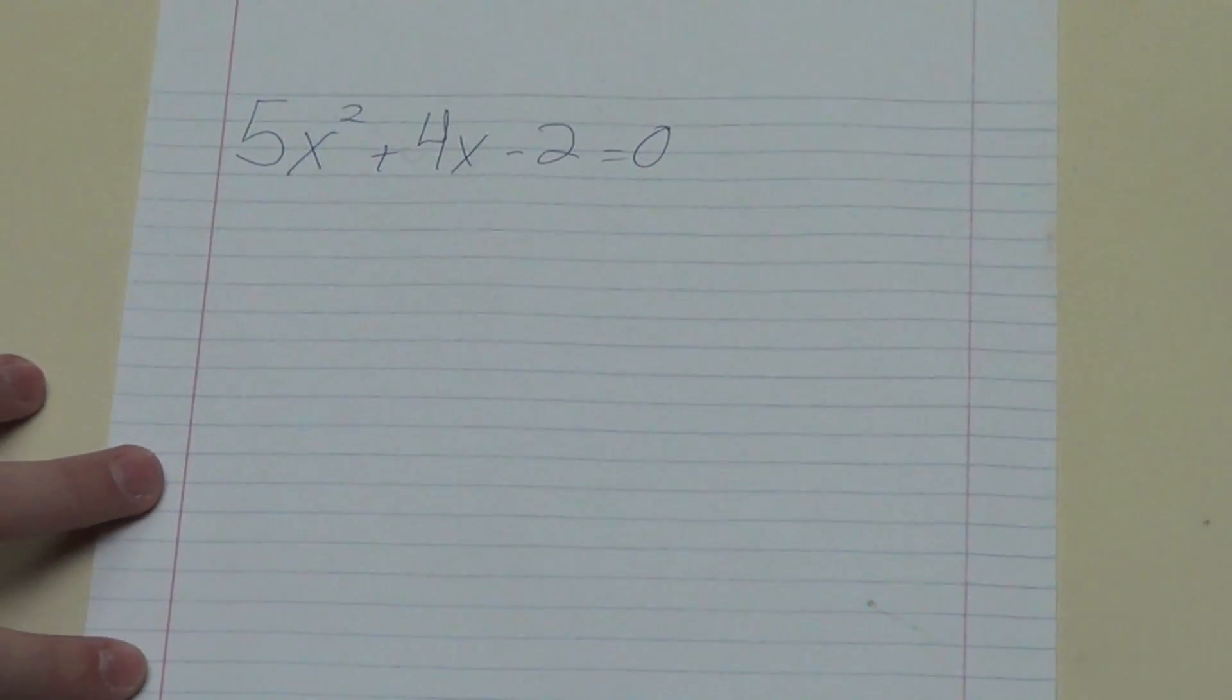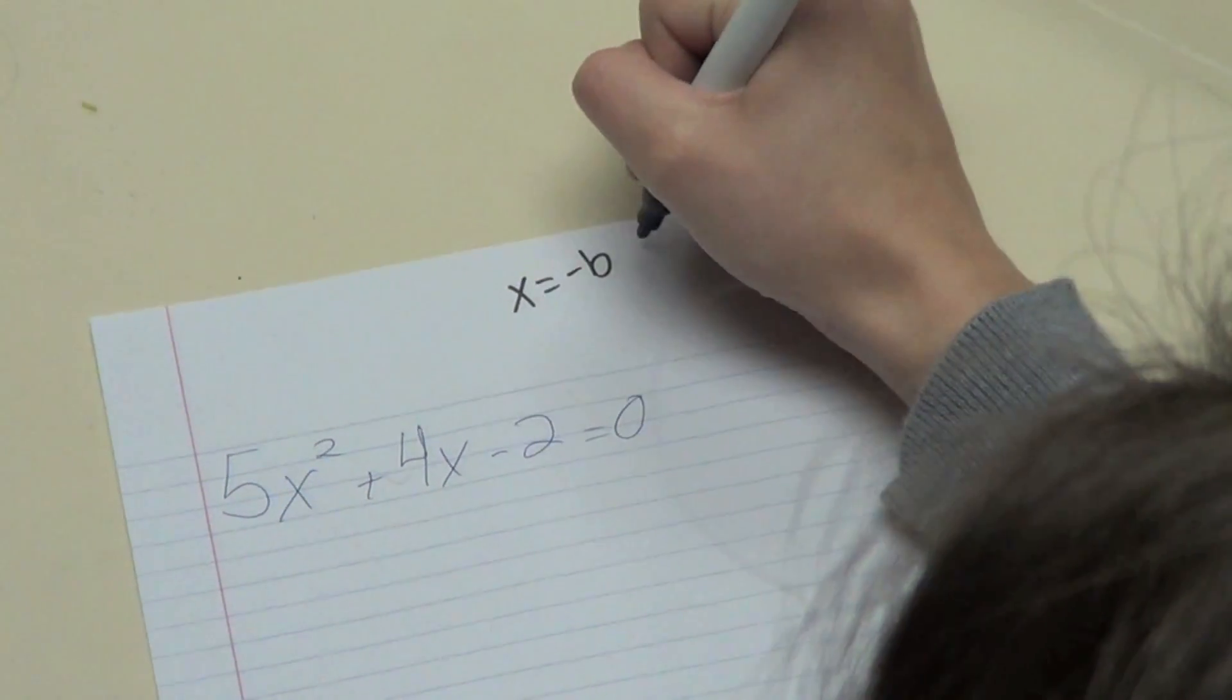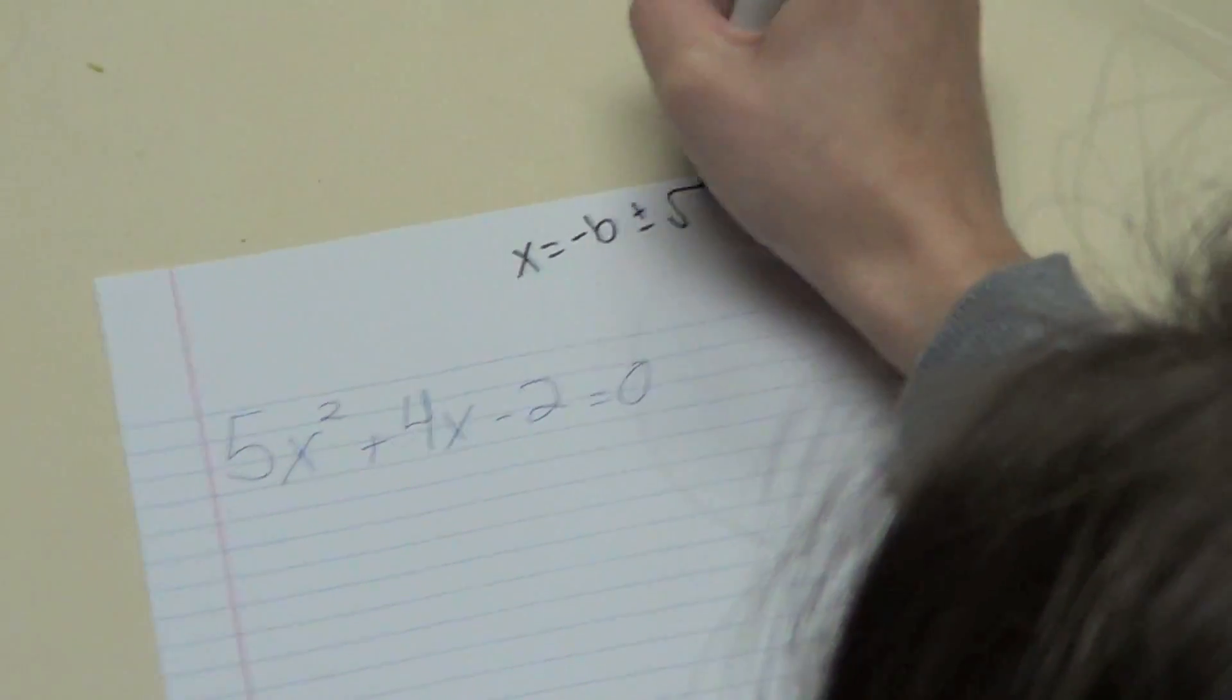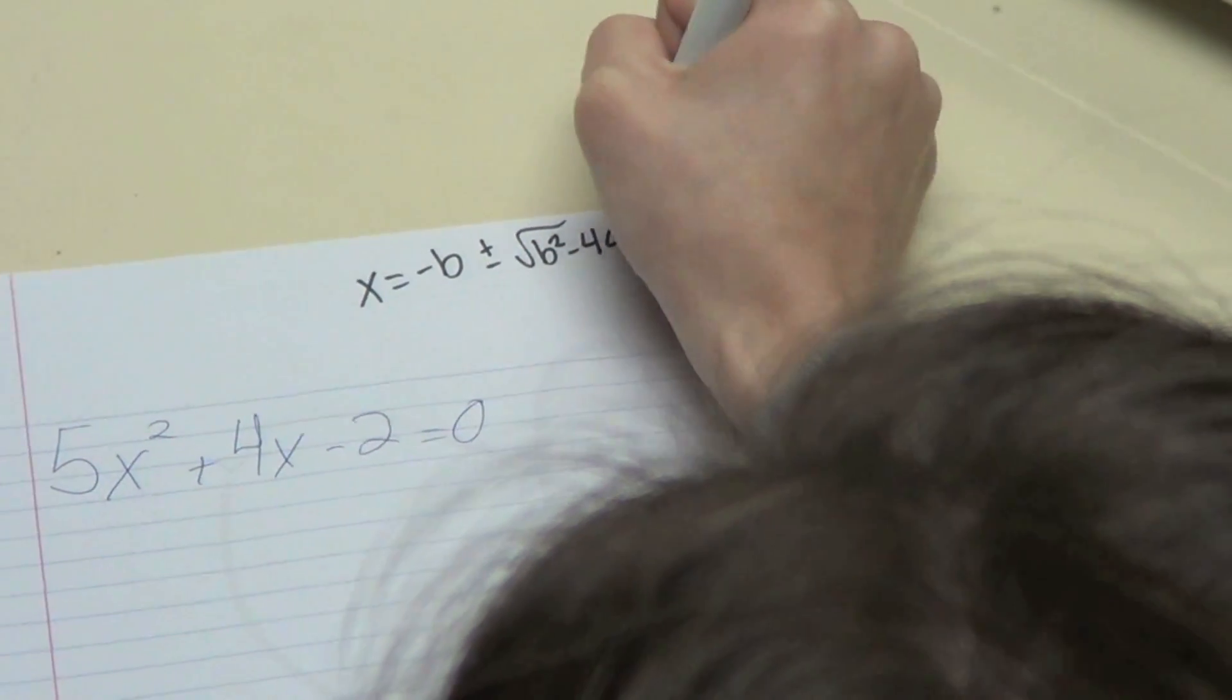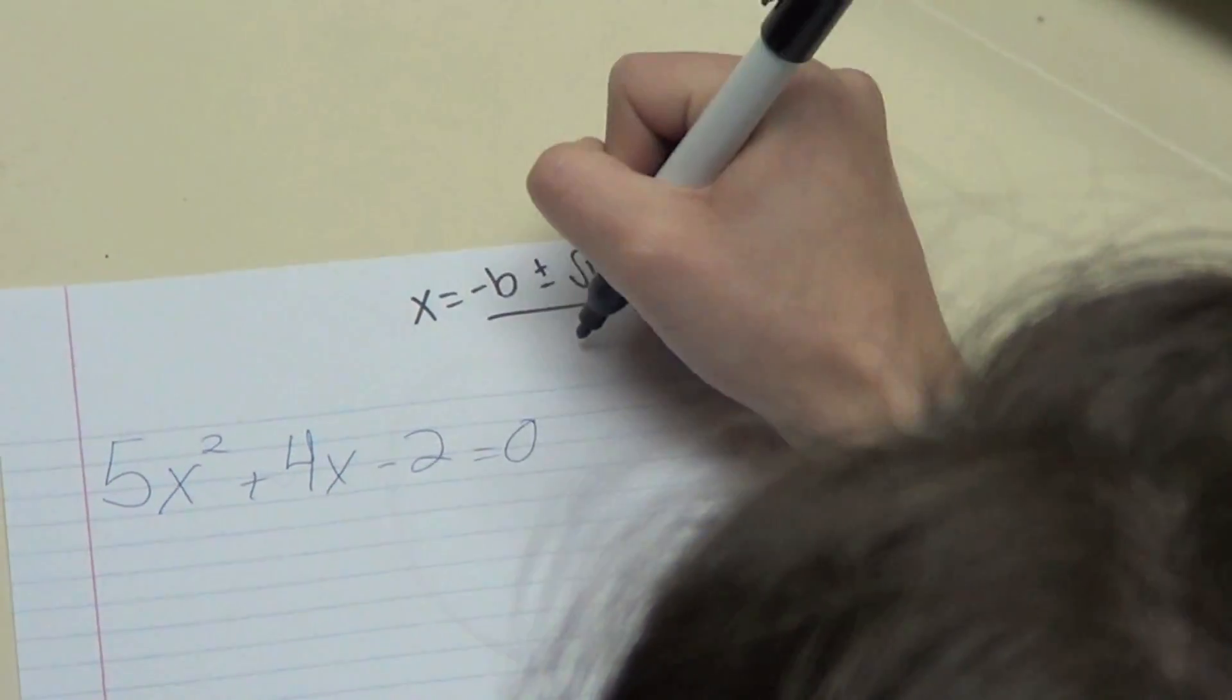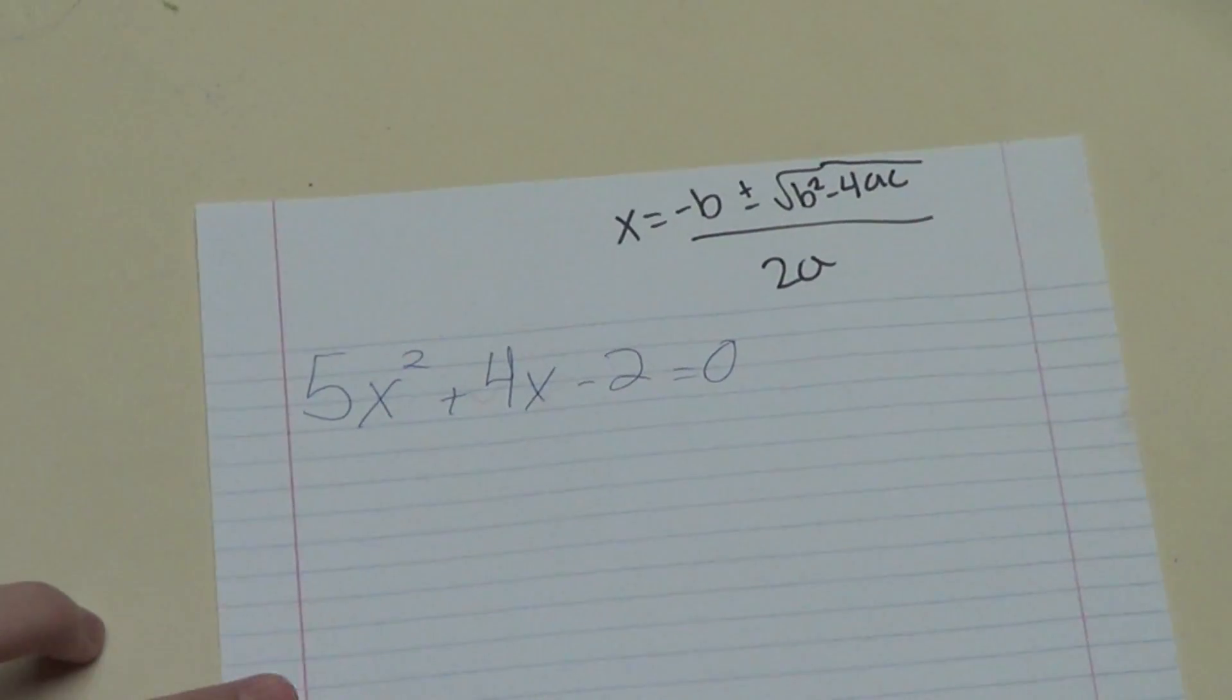Well, the quadratic formula is x equals negative b plus or minus the square root of b squared minus 4ac all over 2a. And then you have to plug in a, b, and c?